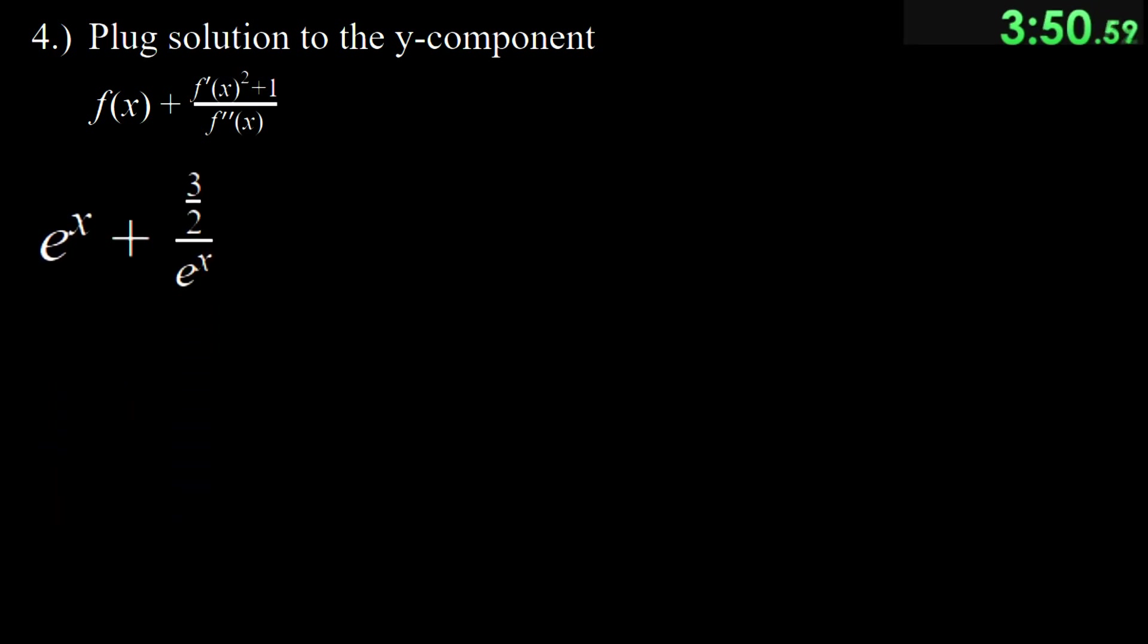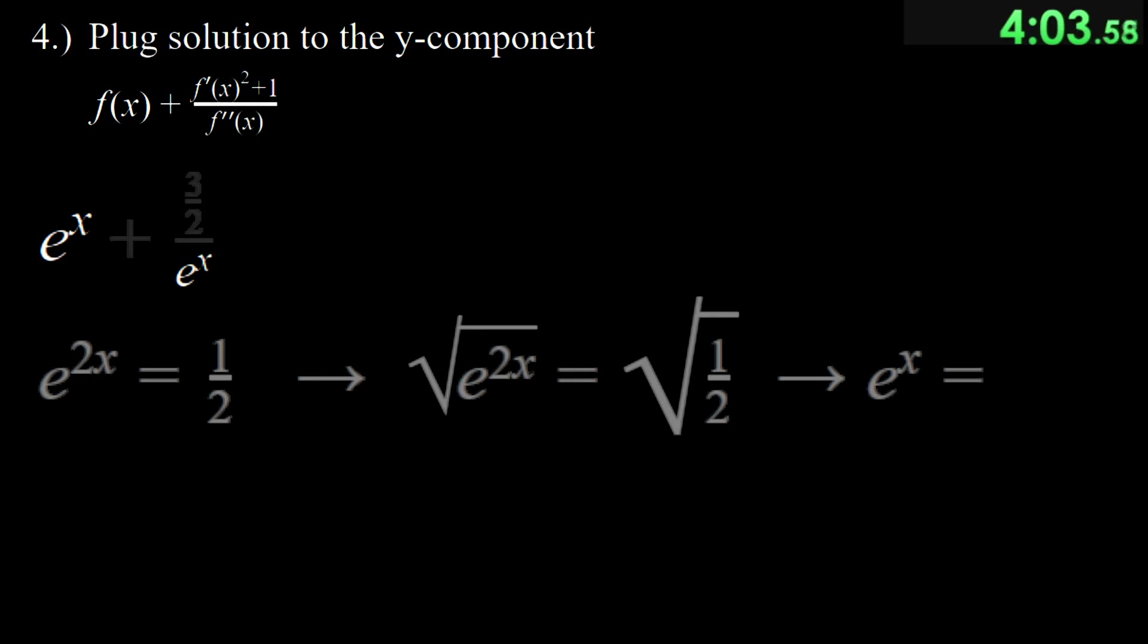Now, we're left with e to the x's. We can gather the value of e to the x by its relation to e to the 2x where we square root the value of e to the 2x to get the value of e to the x, which is square root 2 over 2. This makes the expression square root of 2 over 2 plus 3 halves over square root of 2 over 2.